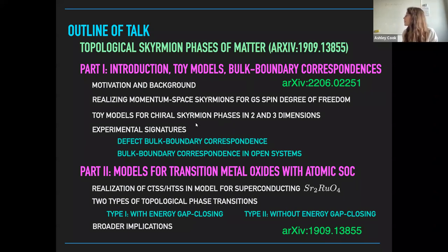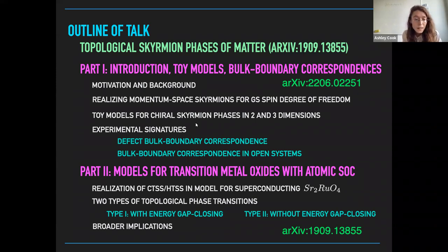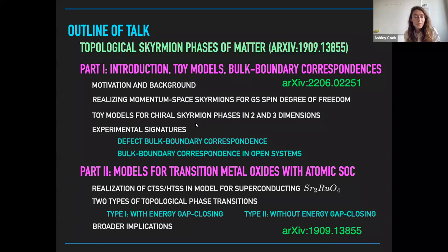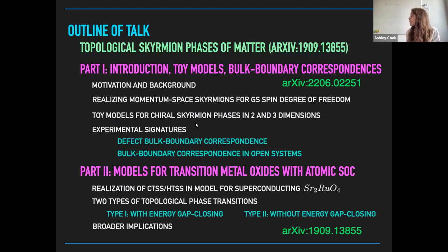The key point is, since I'm focusing on topology associated with spin, atomic spin-orbit coupling can have some really interesting effects. I'll specifically be focusing on two different kinds of skyrmion phase that can occur in a tight-binding model for superconducting strontium ruthenate. What's really nice about this relatively simple tight-binding model is it gives you a chance to observe two different kinds of topological phase transitions associated with these phases.